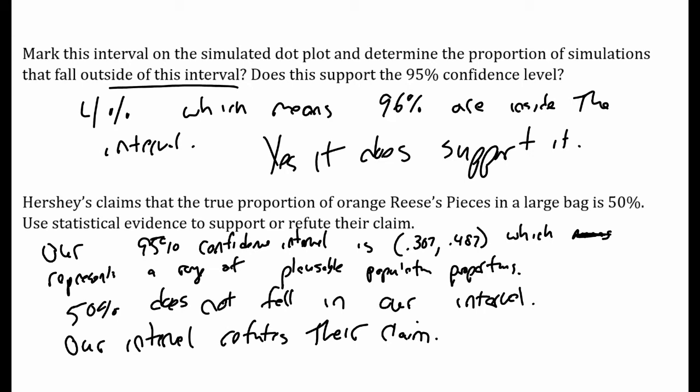To create this 95% interval, which represents the possible population parameters, we take the mean of our sampling distribution, add on two standard deviations, subtract away two standard deviations — and that two standard deviations is called the margin of error for a 95% confidence interval.